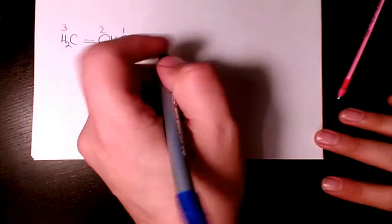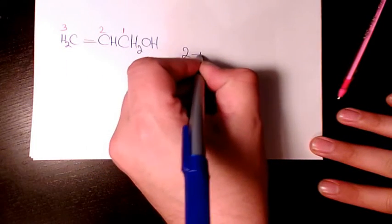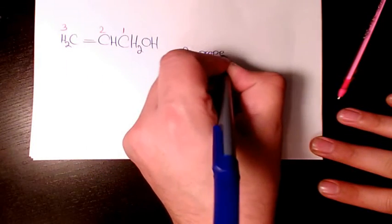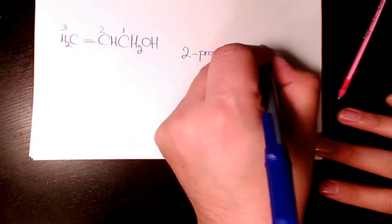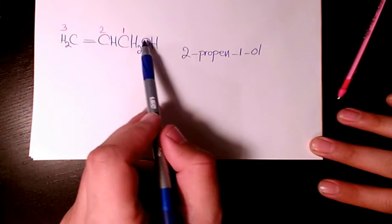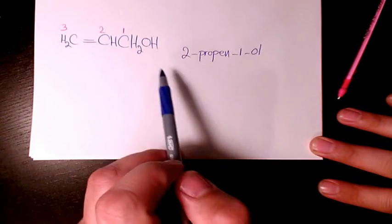So we call it 2-propan-1-ol. 1-ol because the hydroxyl connects to the first carbon.